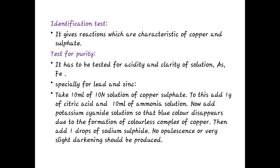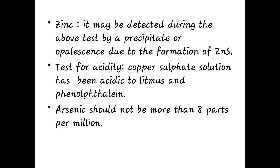The identification test: copper sulfate gives reactions characteristic of copper and sulfate. For purity testing, it is tested for acidity, clarity of solution, arsenic, iron, lead, and zinc. To test for zinc: take 10 ml of a tenth-normal solution of copper sulfate, add 1 gram of citric acid and 10 ml of ammonia solution, then add potassium cyanide solution until the blue color disappears due to formation of a colorless complex of copper. Add 1 drop of sodium sulfide; no opalescence or very slight darkening should be produced. Zinc may be detected by precipitation or opalescence due to zinc sulfide formation. Arsenic should not be more than 8 parts per million (8 ppm).